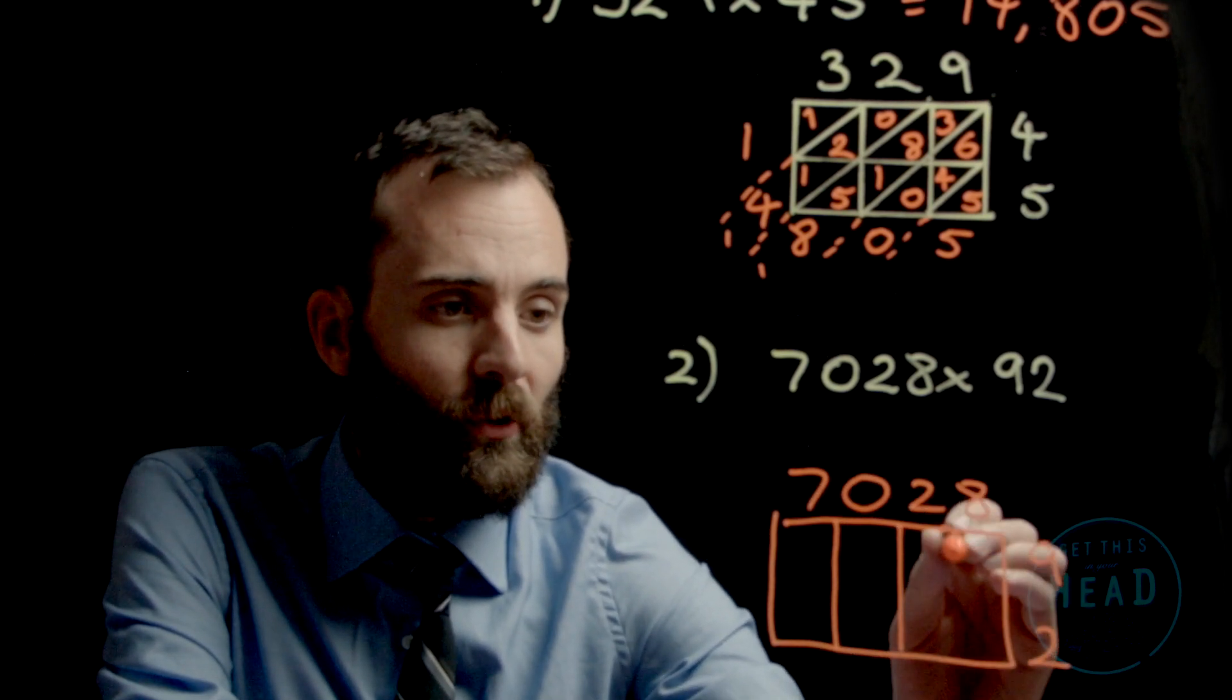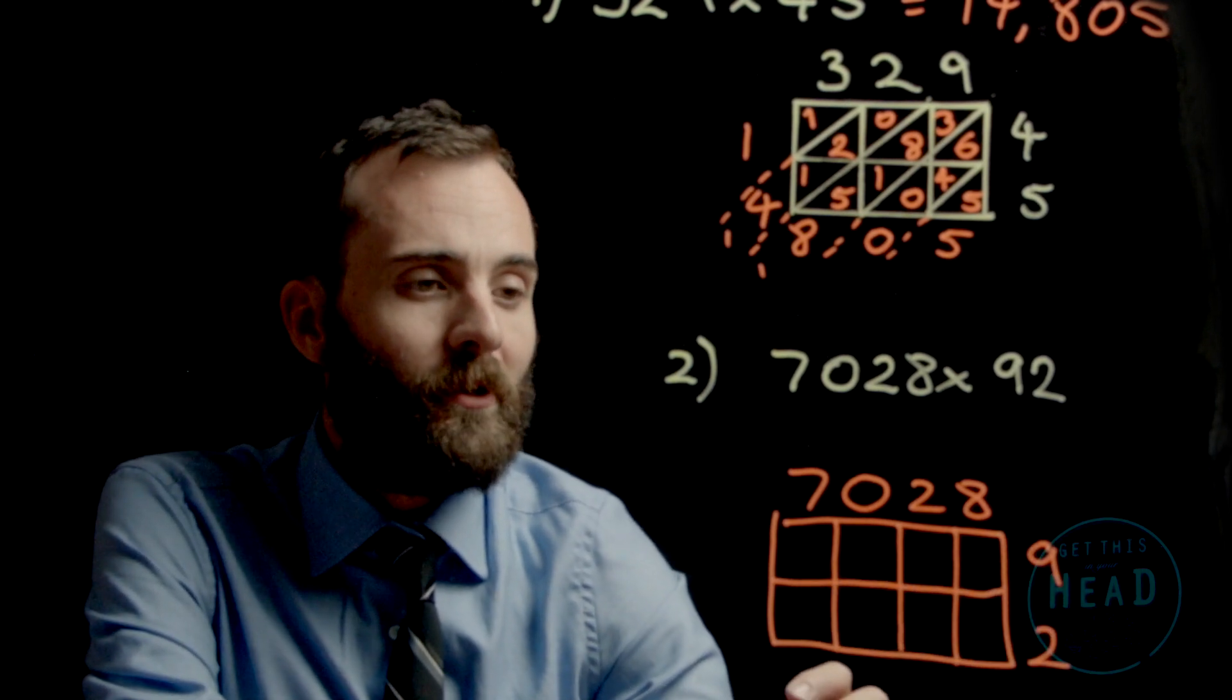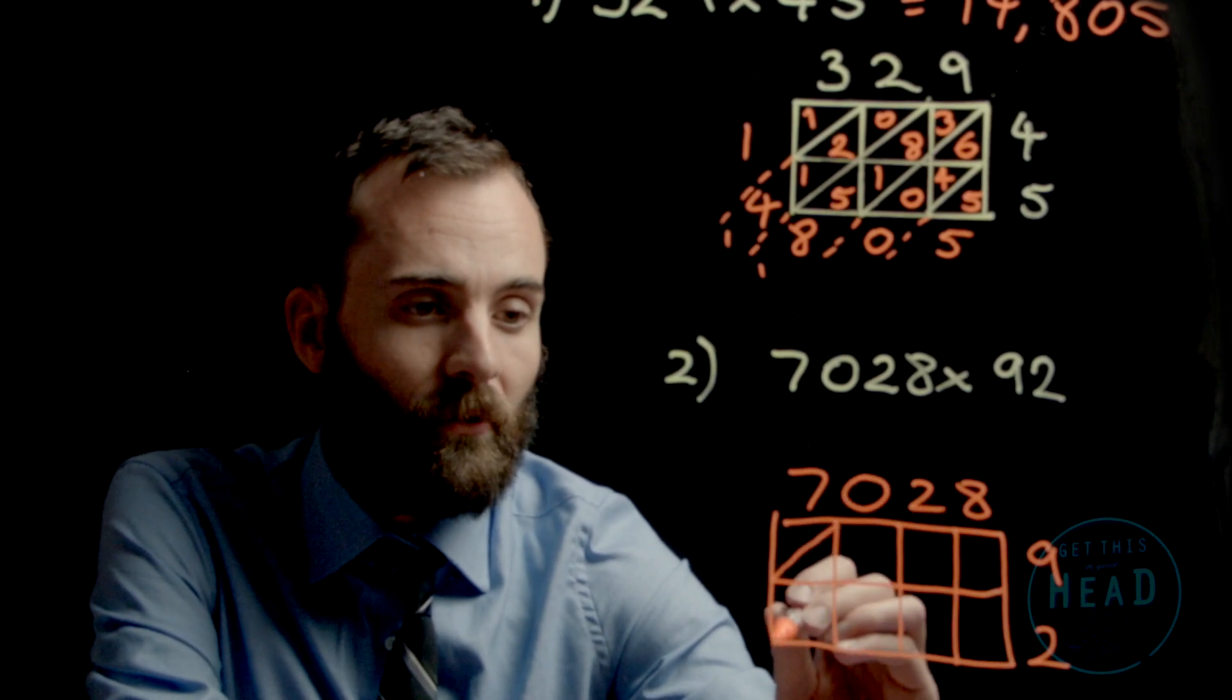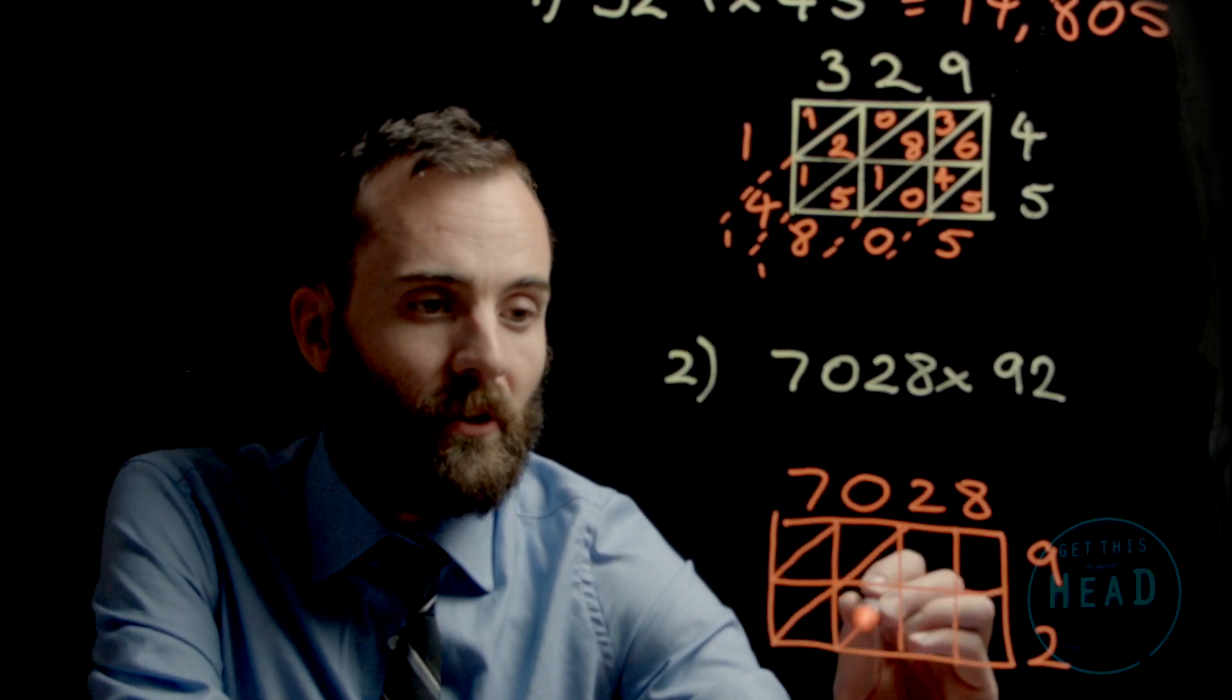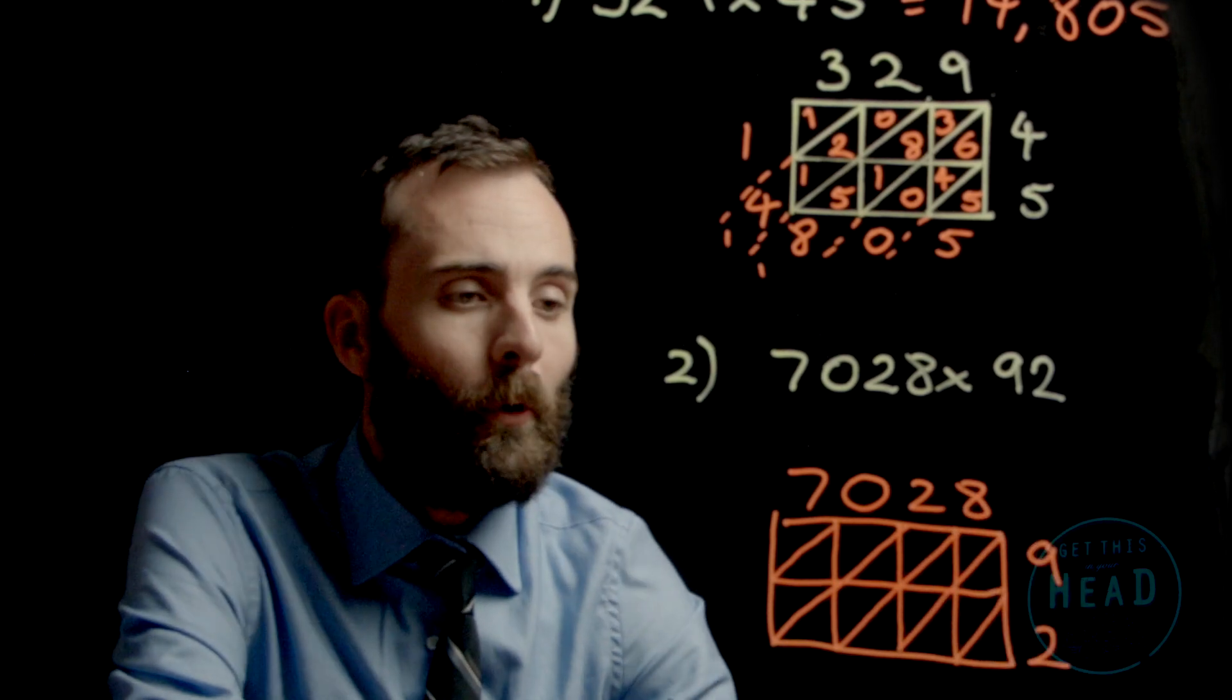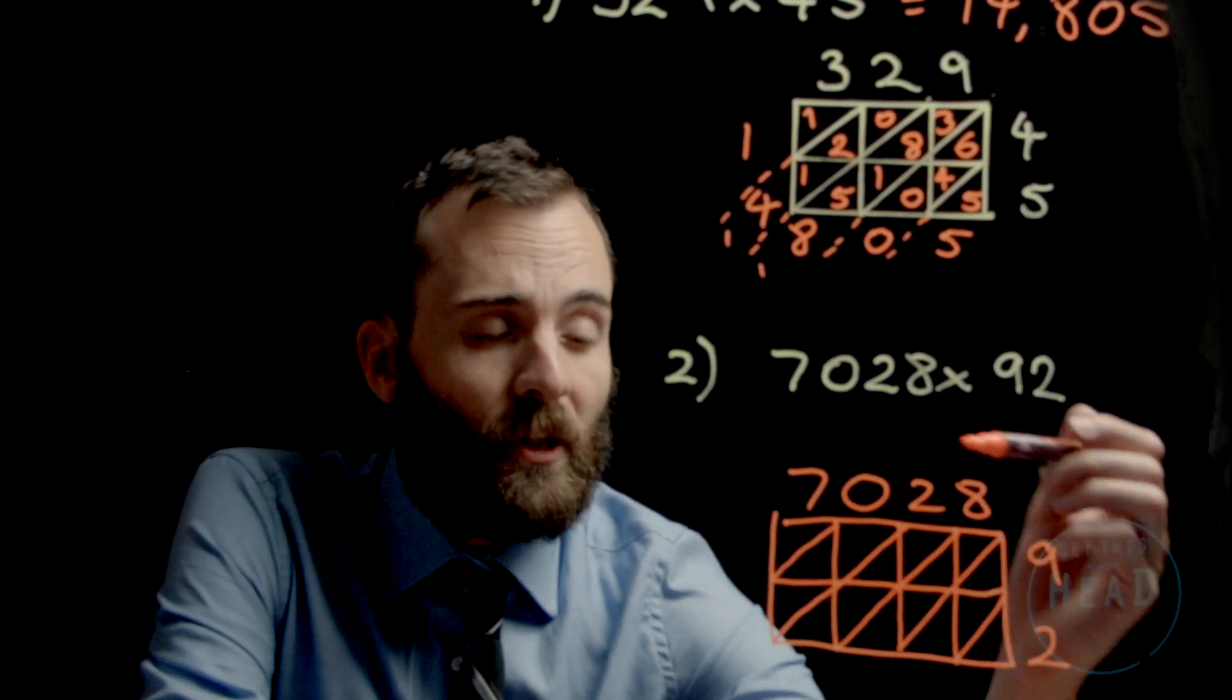The 7, the 0, the 2, and the 8, and then the 9 and the 2 make the rows. Each of these will have a diagonal strip going through them. I'm going to fill in this grid by doing the multiplications for the digits.